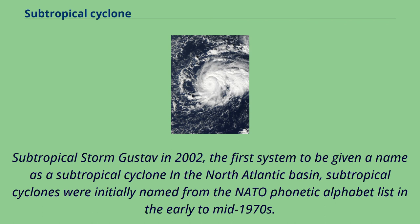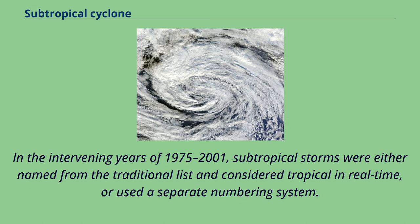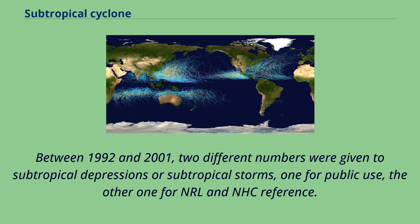Subtropical Storm Gustav in 2002 was the first system to be given a name as a subtropical cyclone in the North Atlantic basin. Subtropical cyclones were initially named from the NATO phonetic alphabet list in the early to mid-1970s. In the intervening years of 1975 to 2001, subtropical storms were either named from the traditional list and considered tropical in real time, or used a separate numbering system. Between 1992 and 2001, two different numbers were given to subtropical depressions or subtropical storms: one for public use, the other for NRL and NHC reference.